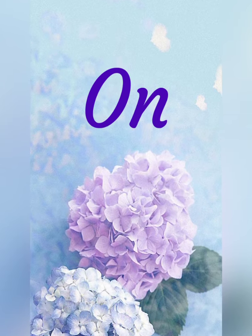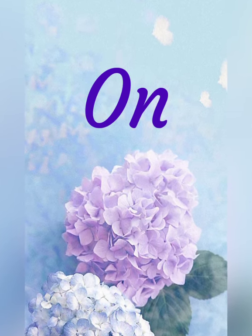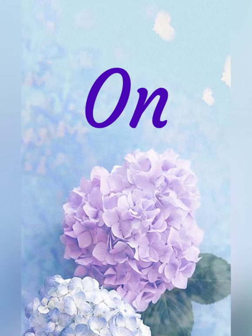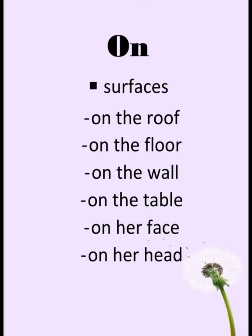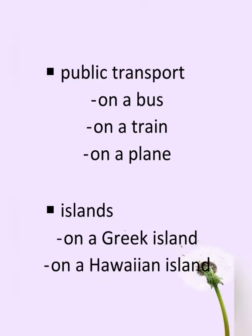Next we have 'on.' 'On' tells us that the person or object is located on a surface — that is, when one thing is attached to or touching something. 'On' is used when something is on a surface: on the roof, on the floor, on the wall, on the table, on her face, on her hat. I'm giving you just a few examples so you'll have the general idea.